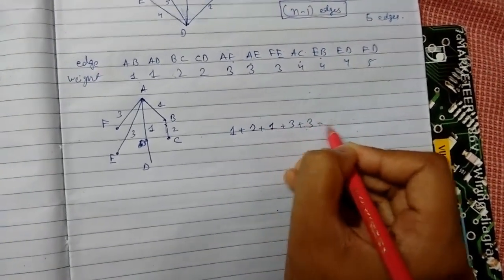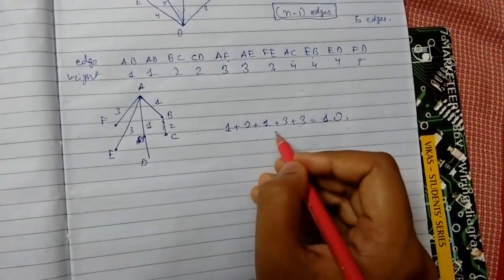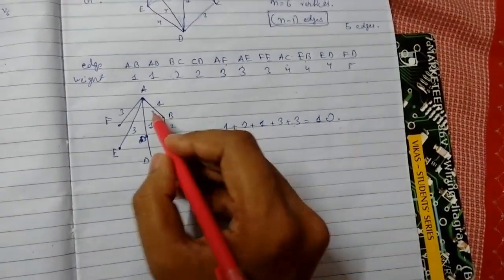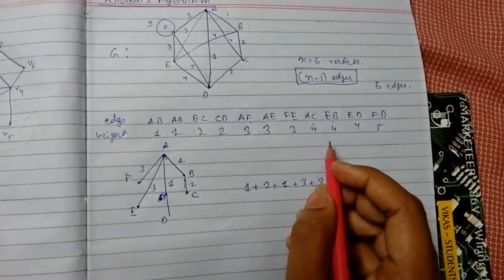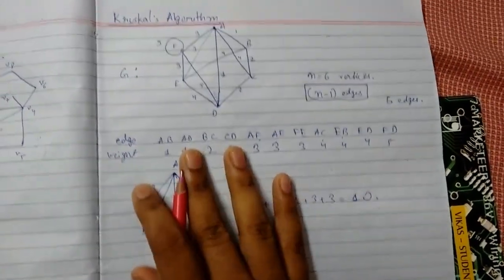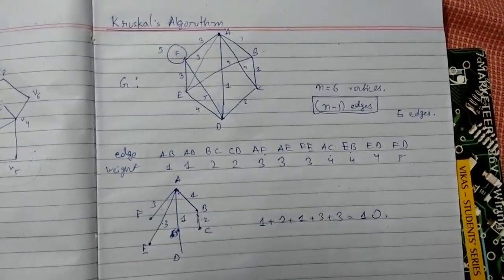So the weight of this spanning tree will be 1 plus 2 plus 1 plus 3 plus 3, this will be 10. We can see 5 edges, so it has been verified. This was Kruskal's algorithm. Thanks for watching.